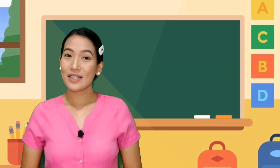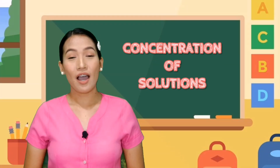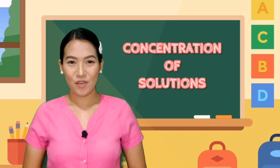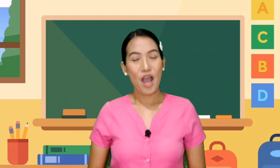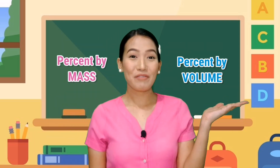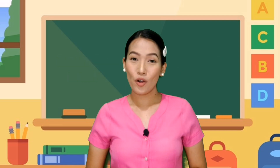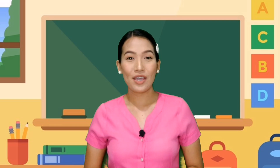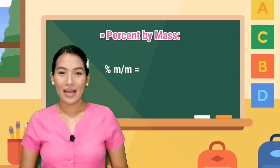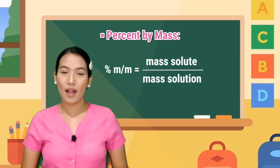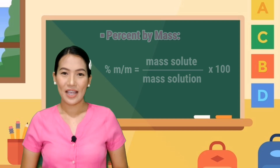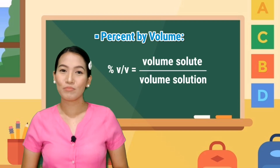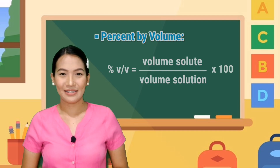In our previous lesson, you learned about concentration of solutions. As you can remember, there are two ways to express the percent concentration of solutions. These are percent by mass and percent by volume. You also learned that in order to know the accurate amount of percent concentration of a solution, we use the formulas: percent by mass equals mass solute over mass solution times 100, and percent by volume equals volume solute over volume solution times 100.